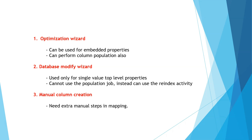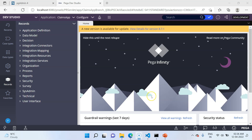Instead of column population, with the database modify wizard you can use some other re-index activity. The third option is manual column creation — totally manual. You create a column in the database, specify the mapping in the class rule form, then save both the class and the database table instance to complete the mapping. Since we need to expose three properties, we will use each method for each property. Now we will start with exposing a property using the optimization wizard.